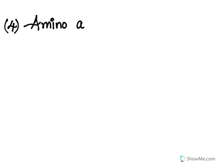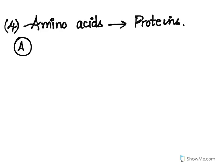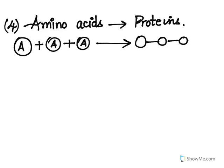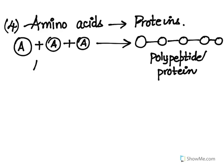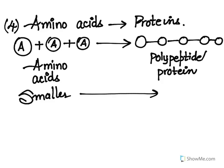Next up is number four, which is easy: amino acids to proteins. Amino acids are the monomer for proteins or polypeptides. Smaller molecules — amino acids — come together to give us a larger molecule which is a polypeptide or protein. These are smaller molecules coming together and resulting in a large molecule, hence this is an anabolic reaction.